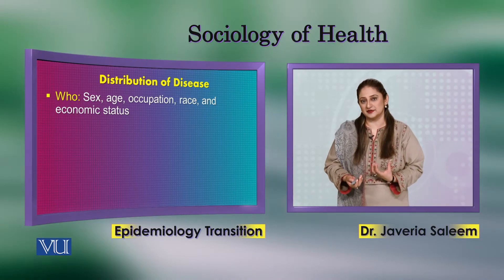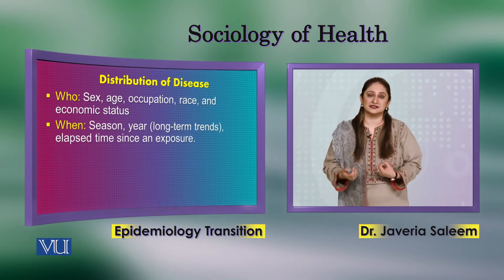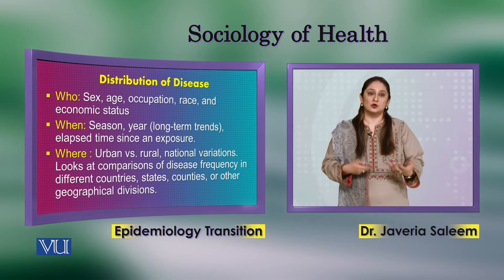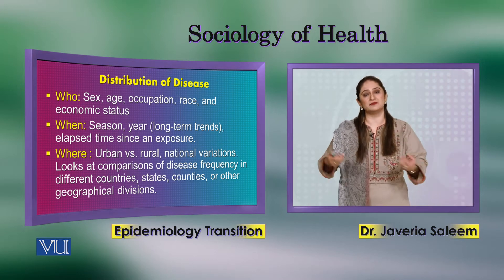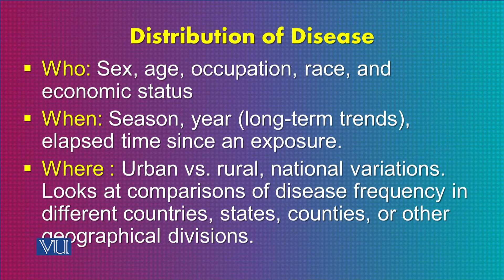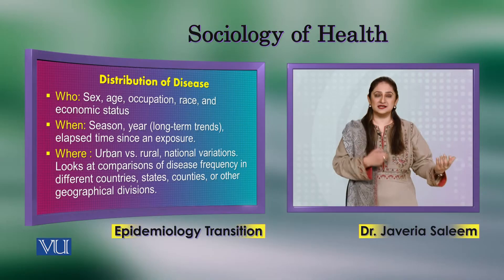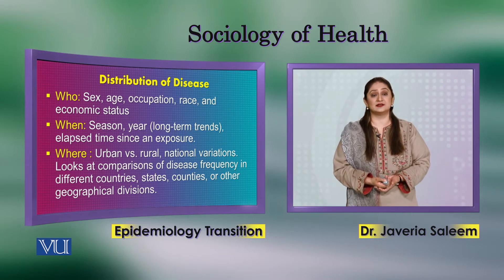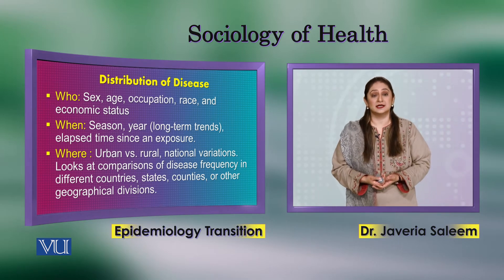We have seen the definition of epidemiology and the distribution of disease. In the distribution of disease, we use the concept of who, when, and where. Who is more affected — which sex, male or female? Which age group — children, adults? Which occupation or economic status has a higher disease rate? When does the disease occur? And where — comparing disease rates across different countries, states, counties, or geographical regions.